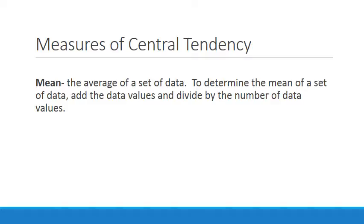So first of all let's look at these measures of central tendency. There's a few different measures and the first measure is mean. A mean is the average of a set of data. To determine the mean of a set of data, add the data values and divide by the number of data values.